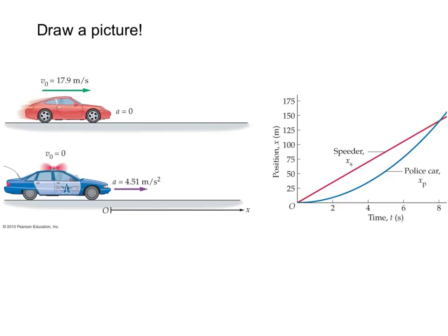Both the speeder and the police car are at the origin, so we're calling this point right here, when the speeder passes the police car, that's going to be our origin for x and our origin for t, actually, because we said that's t equals zero. So that's our origin, remember back to about a week ago, setting up coordinate systems.